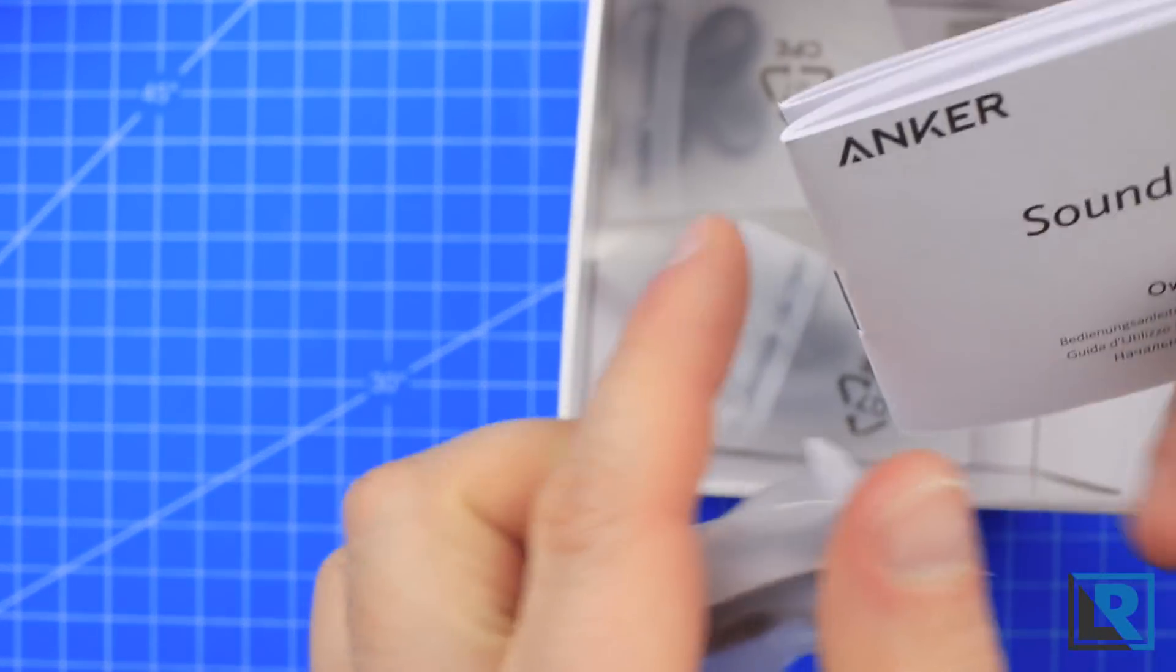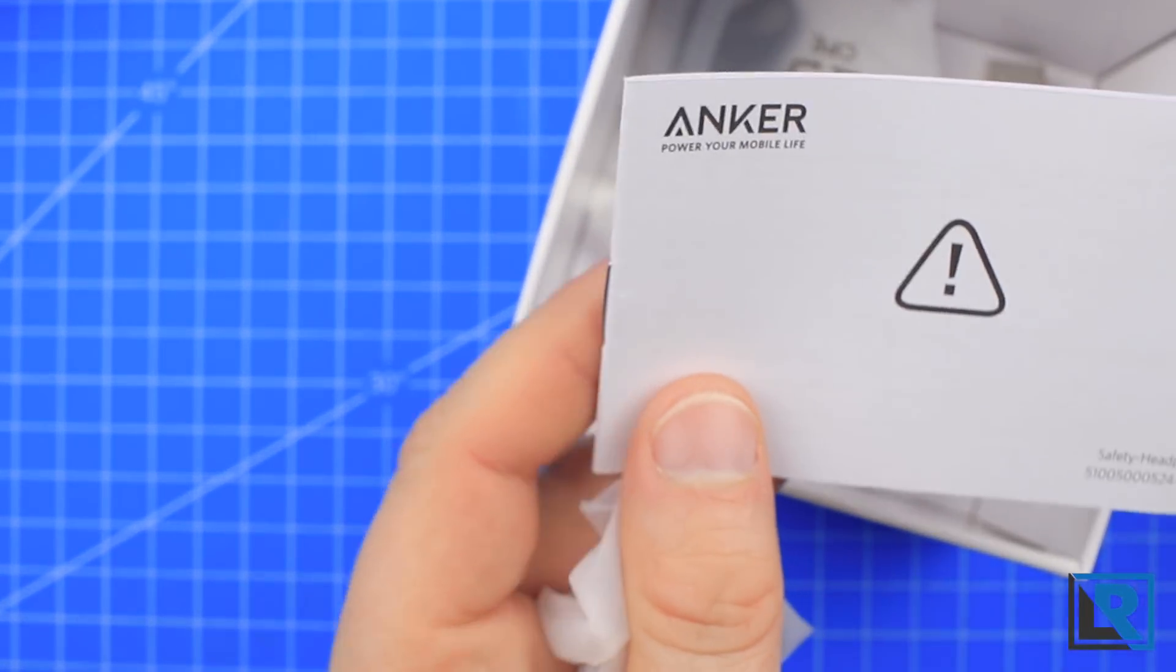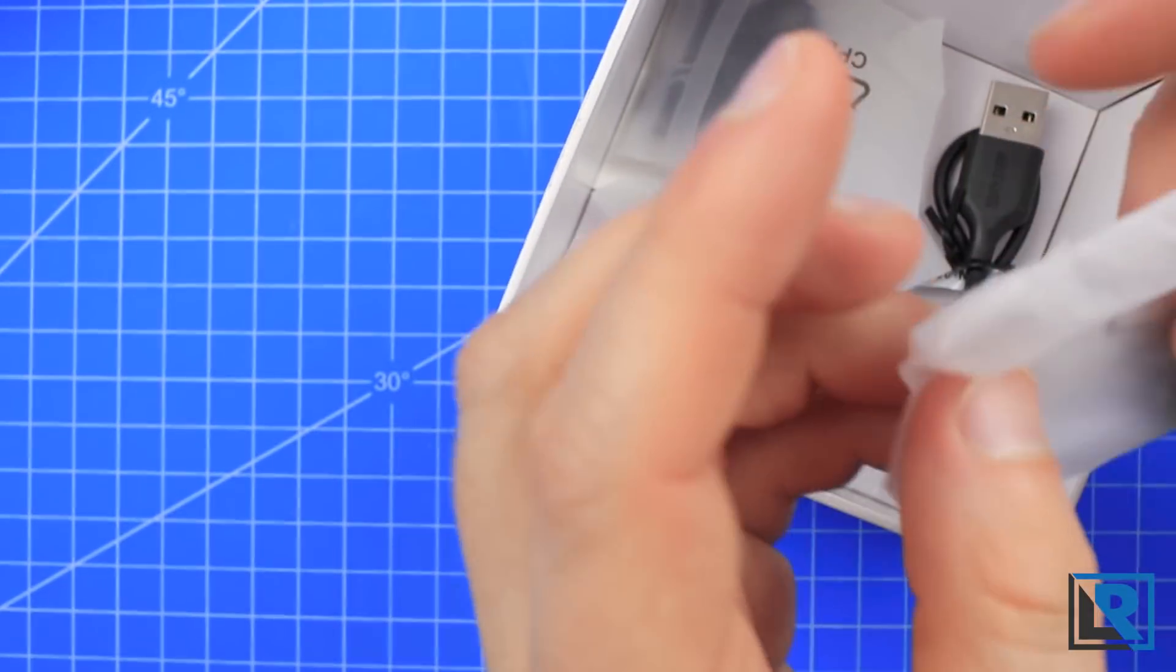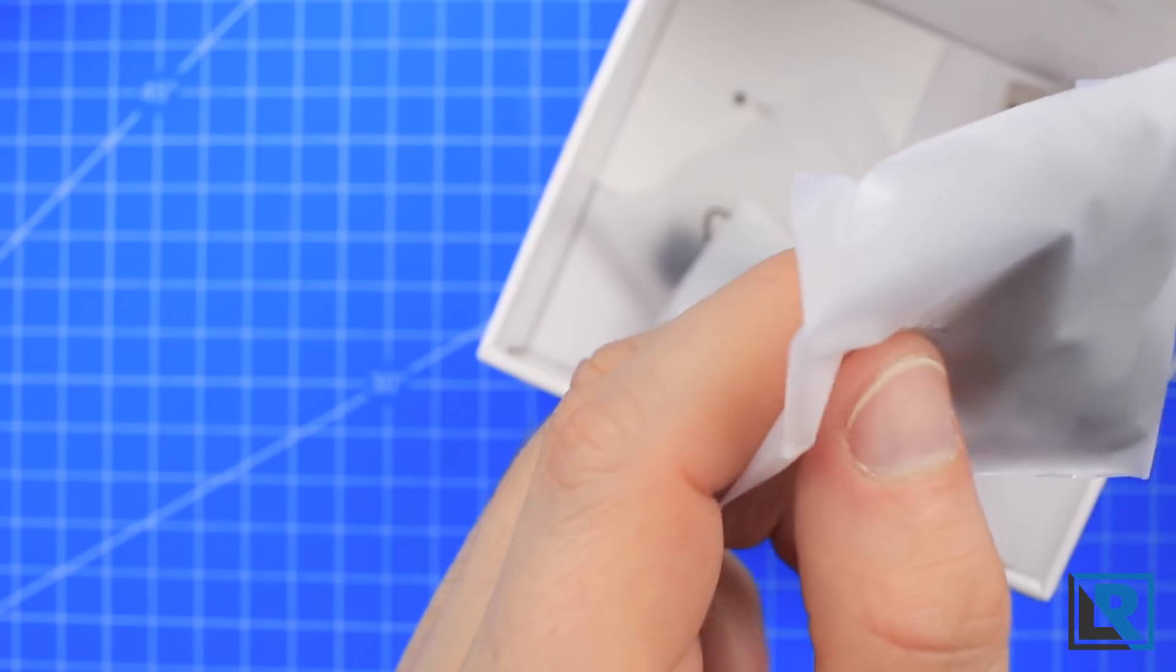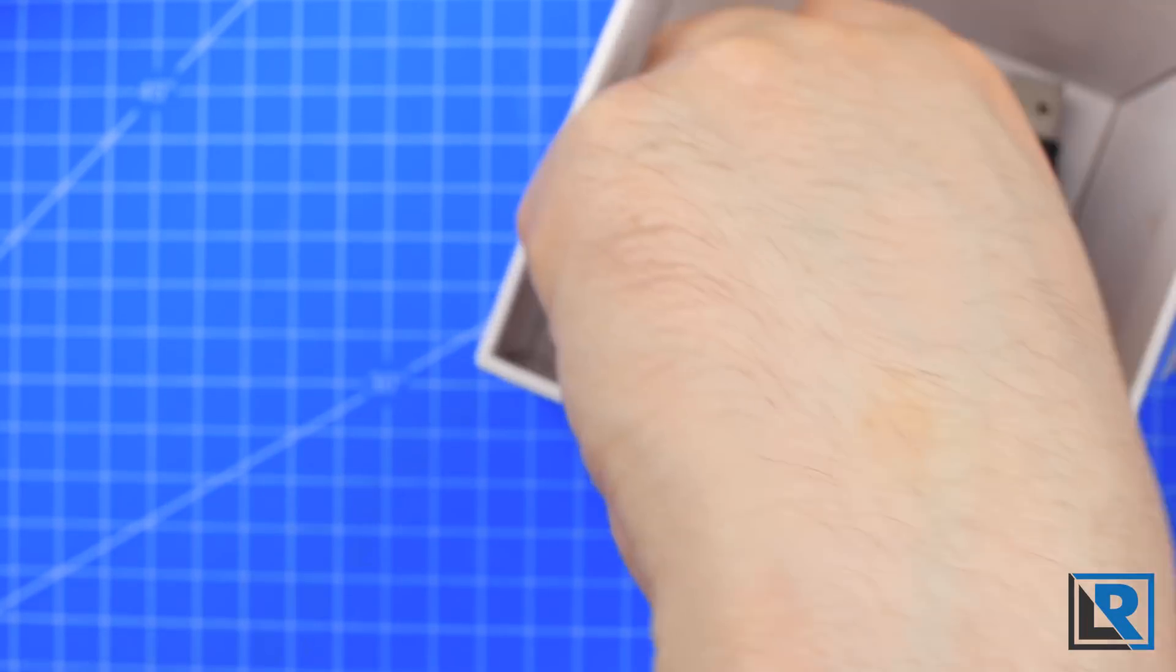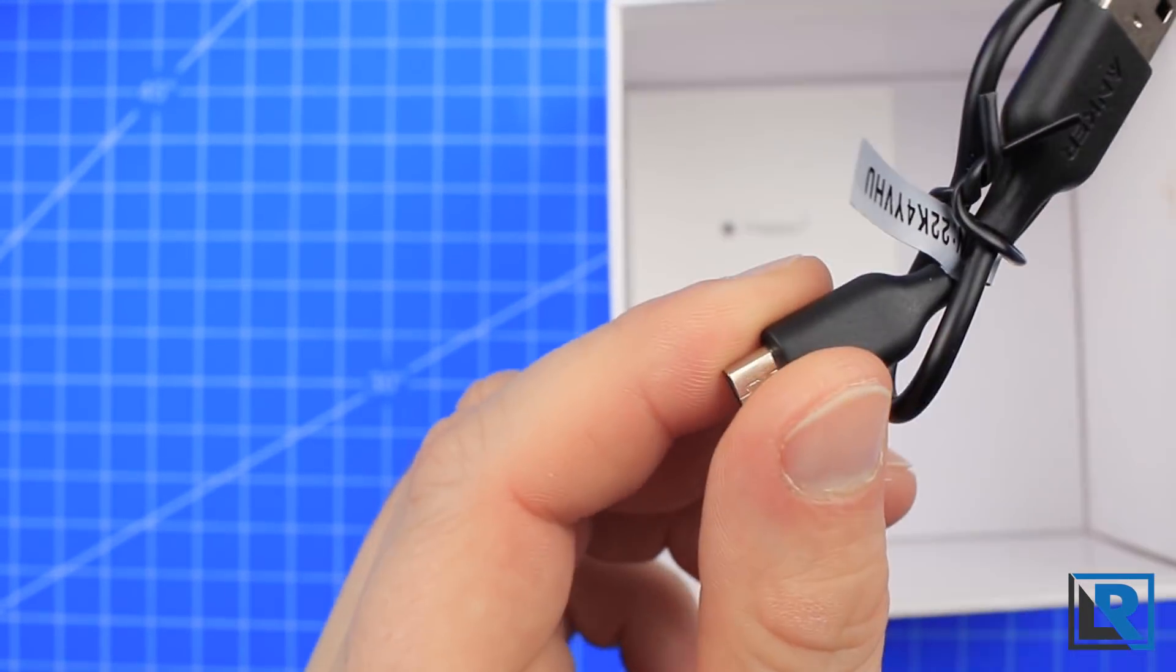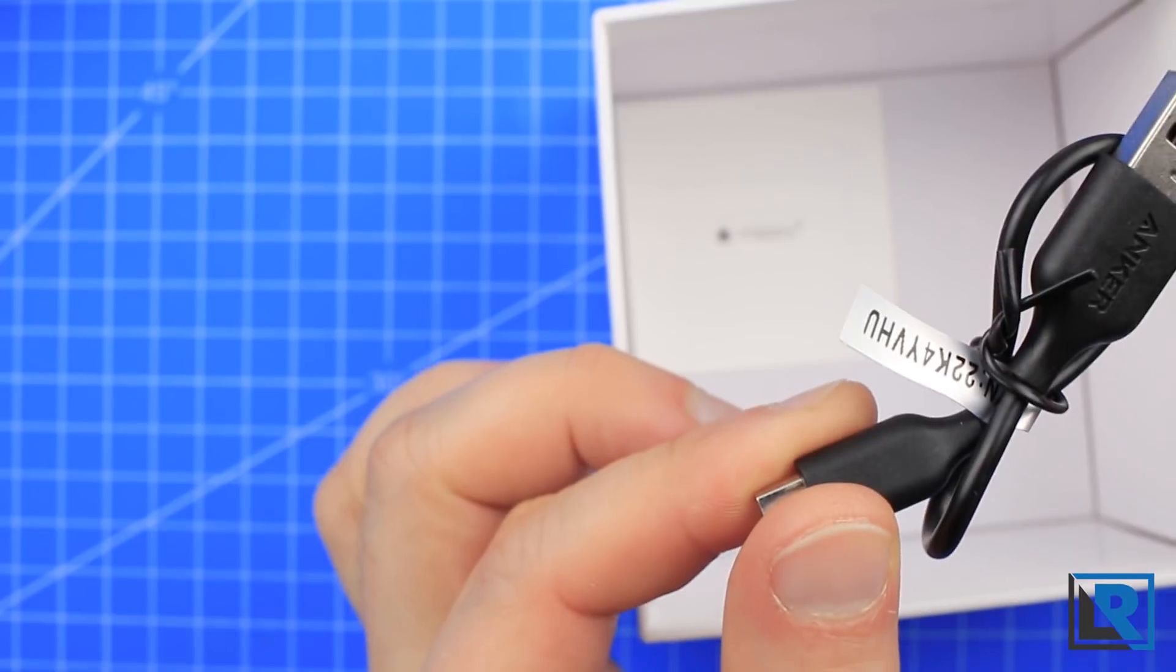Below, you get the manual and a safety guide, and then you get a clip to hold it onto your shirt if you want. You get the earwings, you get some ear tips in both these packages, and you get a micro USB charging cable, a short one that is branded with Anker.